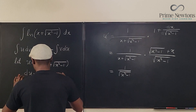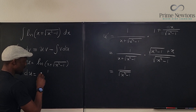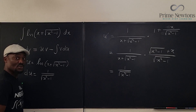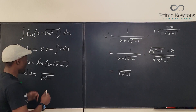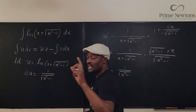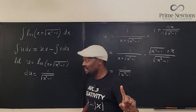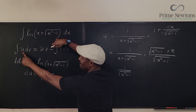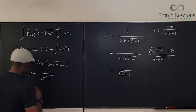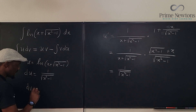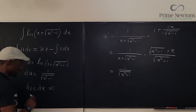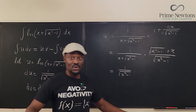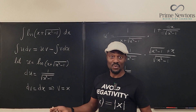So we can say du is 1 over the square root of x squared minus 1 dx. Now we need dv and v. We said dv equals dx, which implies — integrating both sides — v is equal to x. And we're done with the setup.